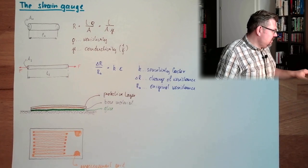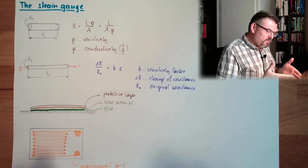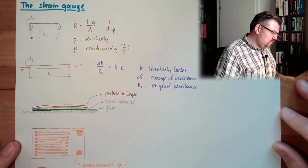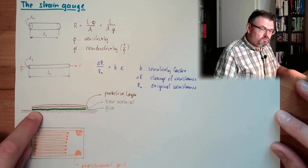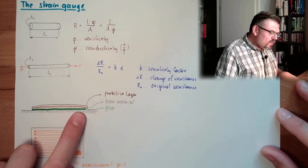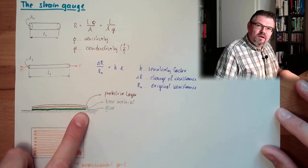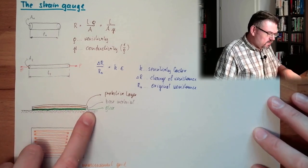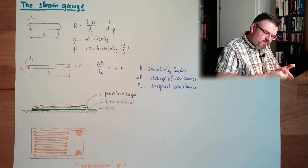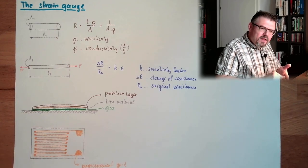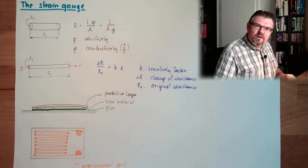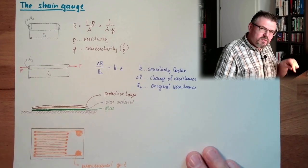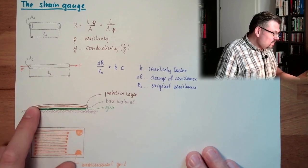And usually there is not only the protective layer. But if you make an application, you stick this to whatever you want to measure. You really have to take care that there is no coating on this material. You really have to grind away every coating and then really stick this to the material. No paint or something like this in between. This glue has to be at the material.